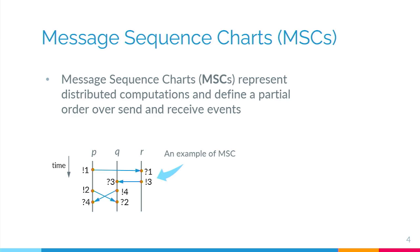To give a couple of examples: looking at the third process R, the reception of message 1 happens before the sending of message 3, and the sending of message 3 happens before its reception, which in turn happens before the sending of 4. So the reception of 1 happens before the sending of 4. However, since an MSC defines a partial order, it's not always possible to compare two events. For instance, the sending of message 2 and the sending of message 3 are incomparable — they are concurrent, executed by different processes, with no path connecting them via message arrows and process lines.